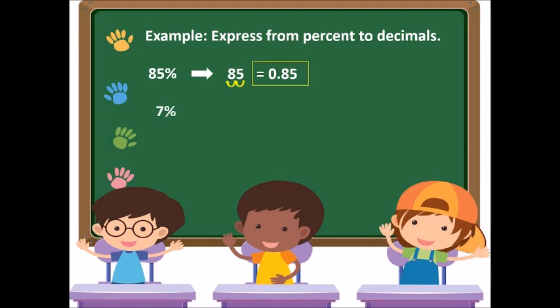Another example: 7%. We write 7 and move the decimal point two places to the left. We fill in the blank with 0, so our decimal is 0.07. Therefore, 7% equals 0.07 in decimal.